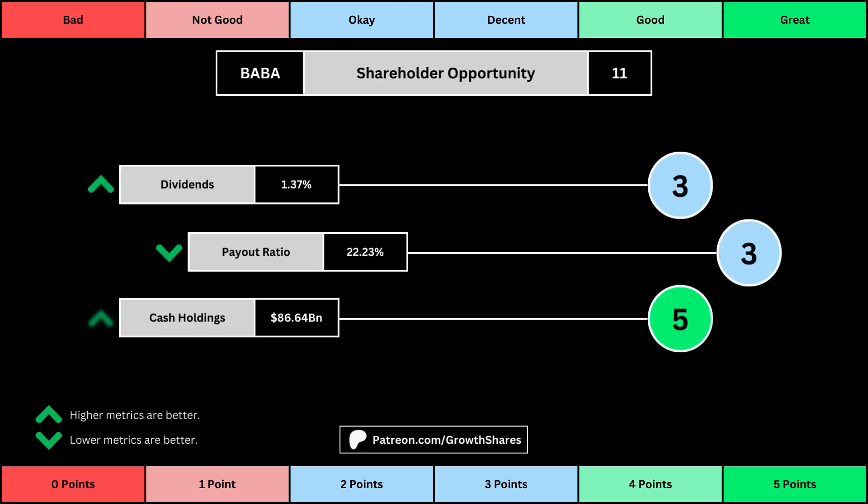The next set of metrics looks at the investment opportunity afforded to shareholders. Here, we get the dividend yield, its payout ratio — which is how much of the company's earnings are going out to pay shareholders — and the cash and cash equivalents the company has in order to pay dividends, reinvest, and pay off the debts it has on its books. Again, you can see the values for each metric, as well as the points given for each.